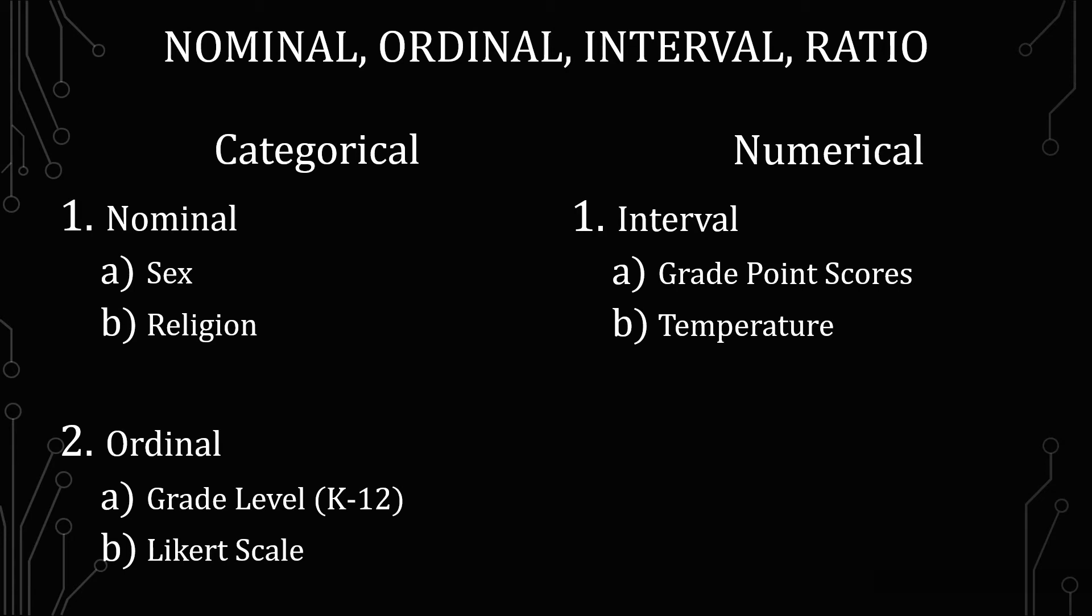The first one we're going to do is interval. We're going to talk about grade point averages and temperature. Grade point average is a numeric representation of what you get for a grade, converted usually to a four-point scale. You know that 4.0 is perfect and zero is very much not. The important thing to understand here is that zero does not mean nothing.